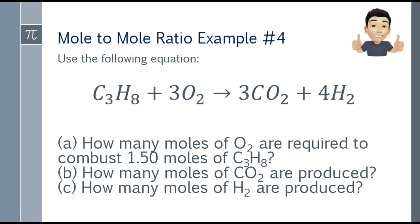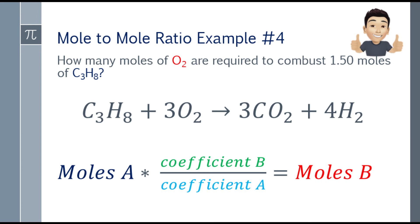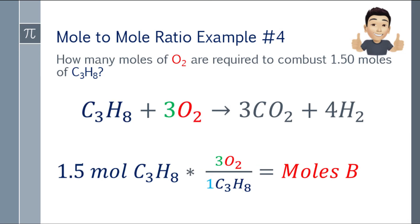Looking at the chemical equation, it is already balanced. For question A — how many moles of O2 are required to combust 1.5 moles of propane — using the formula, the given is 1.5 moles of propane. Multiply by the coefficient of the wanted (O2) over the coefficient of the given (1 C3H8).